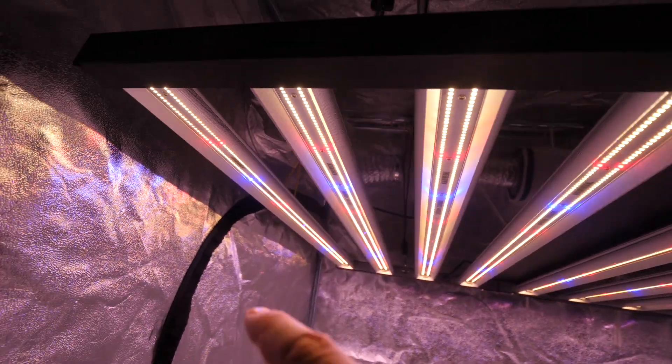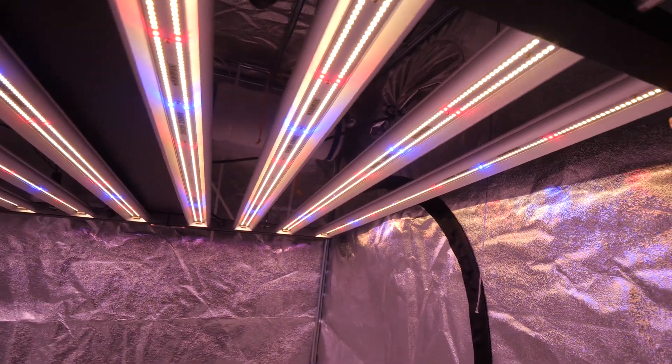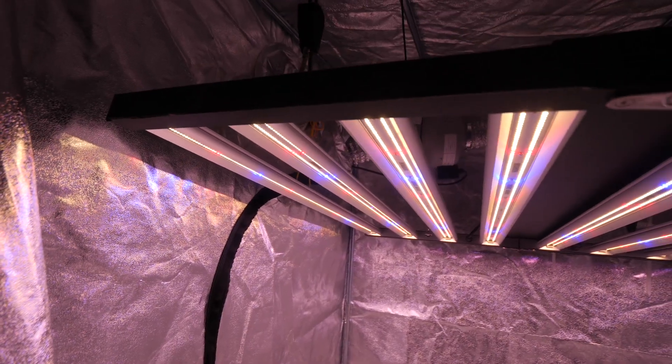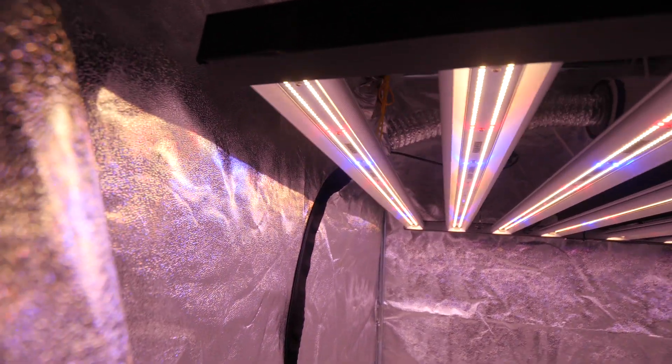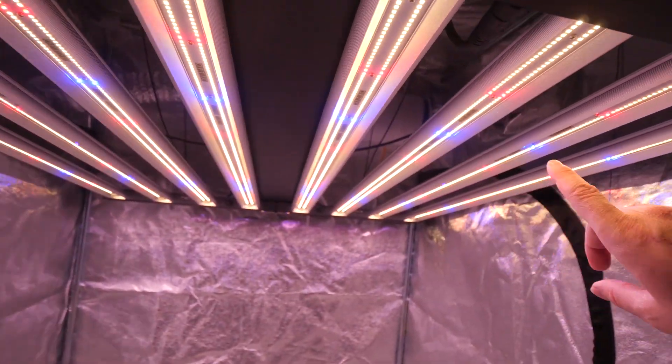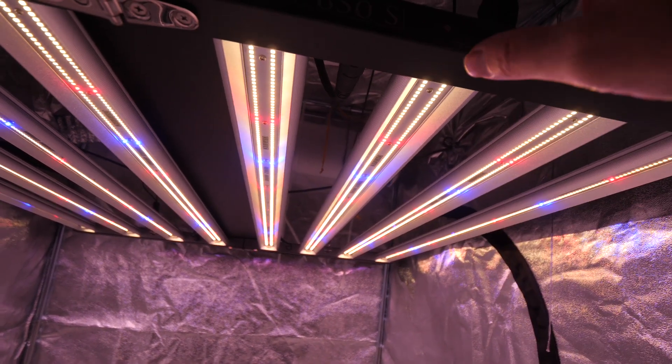This light in a 4x4 tent takes up pretty much the entire tent. There's probably about 2.5 inches or so on each side of the tent to give it some space to wiggle around. But that's really nice because it gives it a super nice PAR spread here. And overall it's just a badass powerful light.